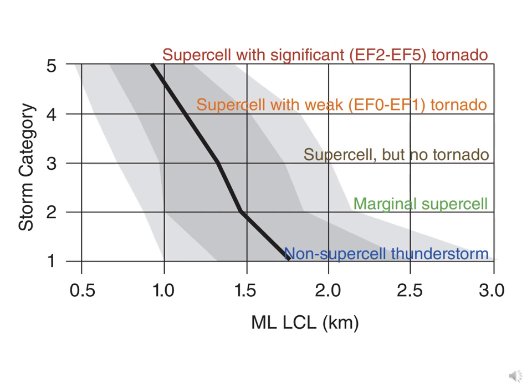A lower LCL means a smaller difference between temperature and dew point temperature, meaning you're closer to saturation. That's not a great predictor, in part because how close you are to saturation mirrors relative humidity rather than being a straight dew point temperature correlation. There's quite a bit of overlap between the different types of storms and the mean mixed layer lifting condensation level.